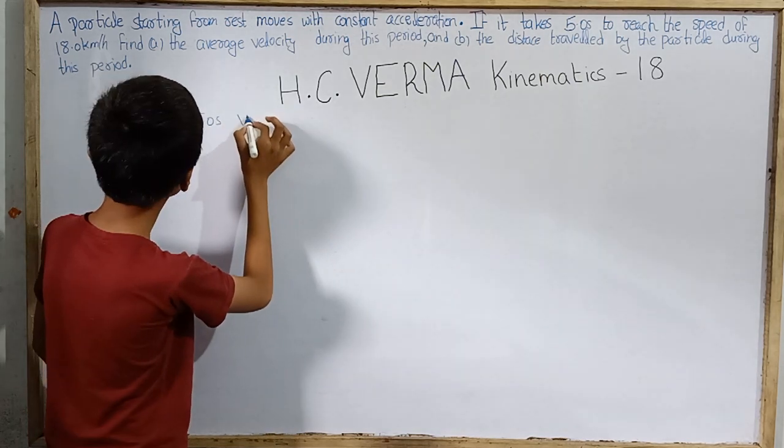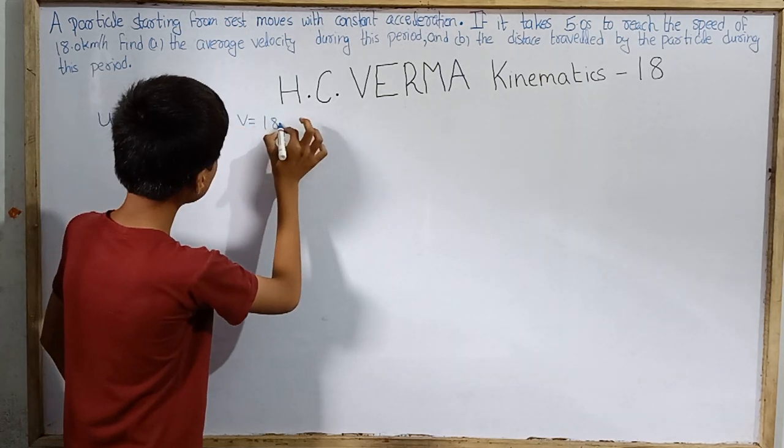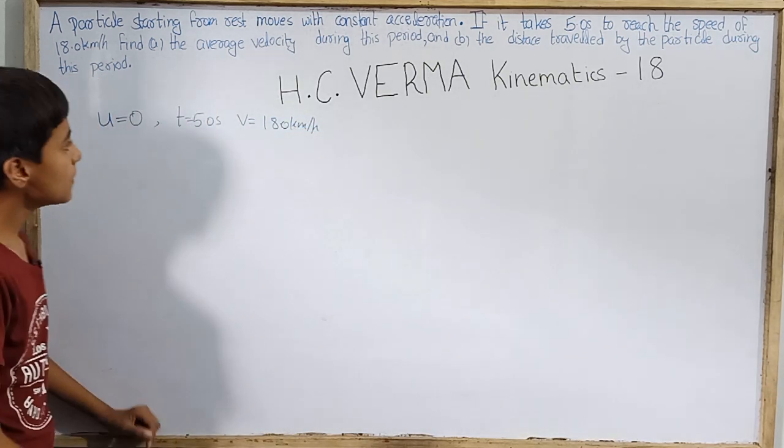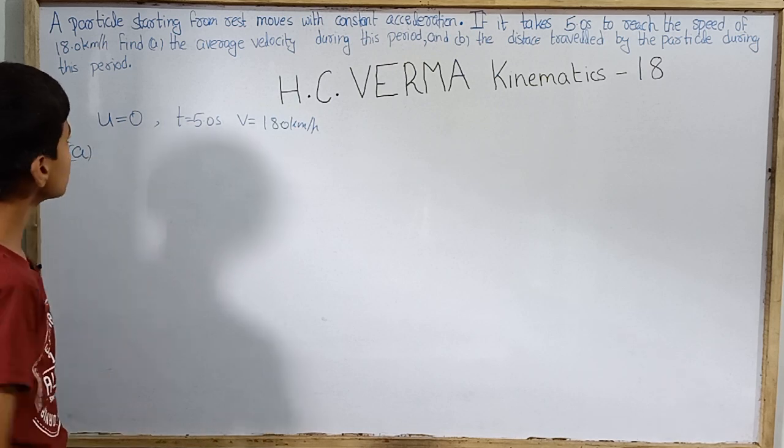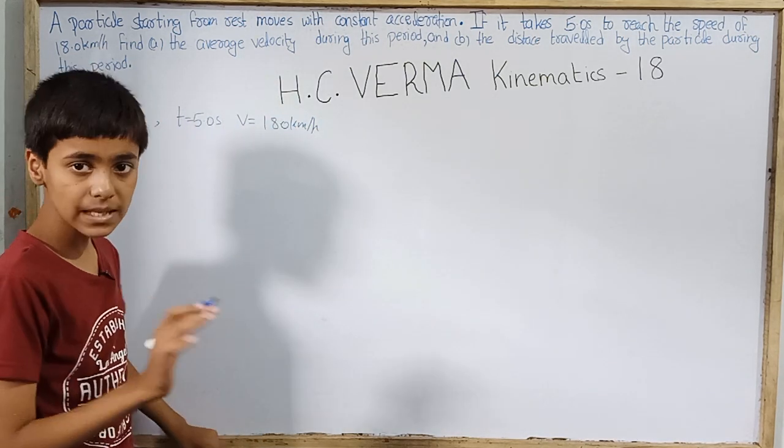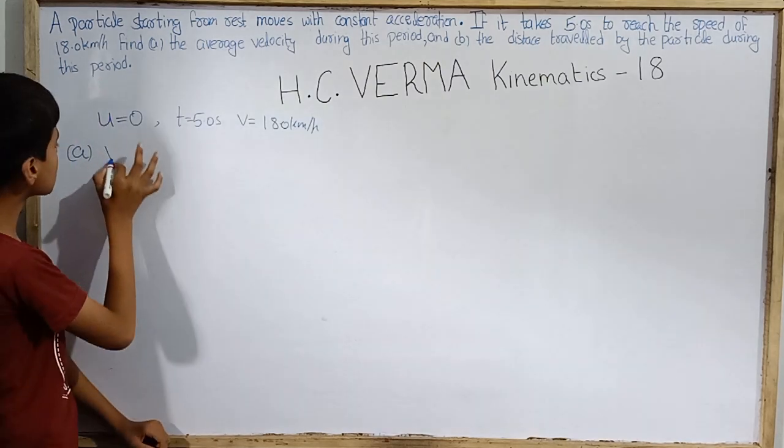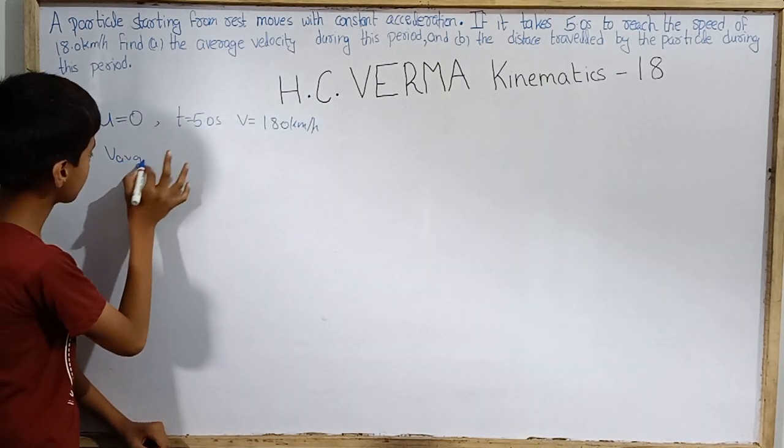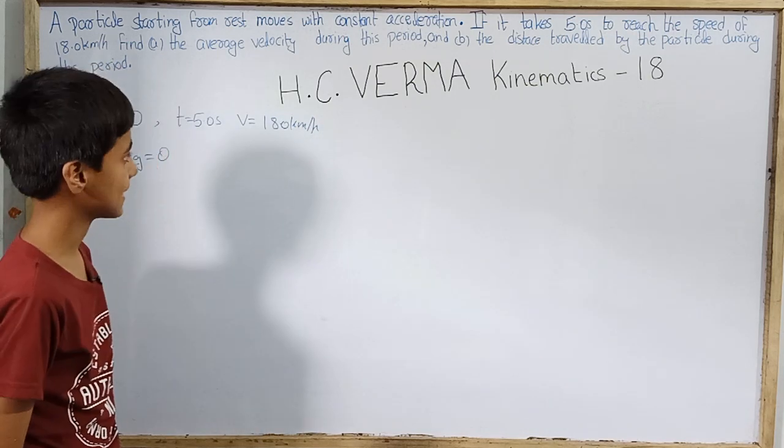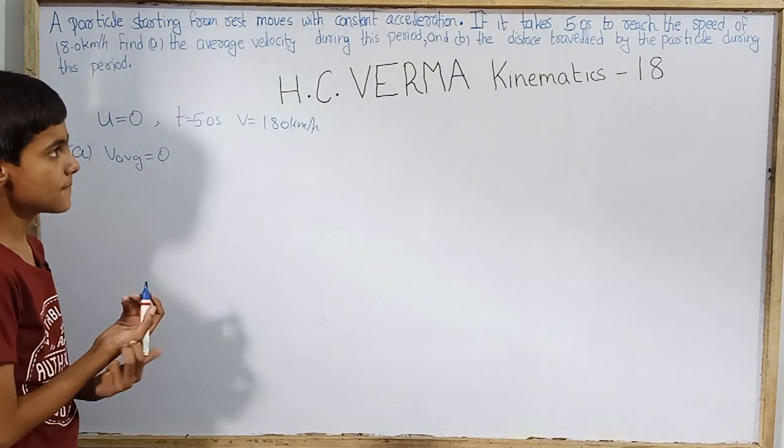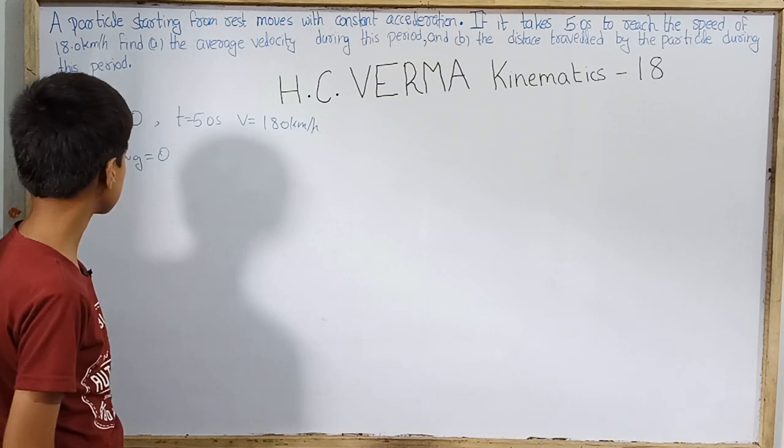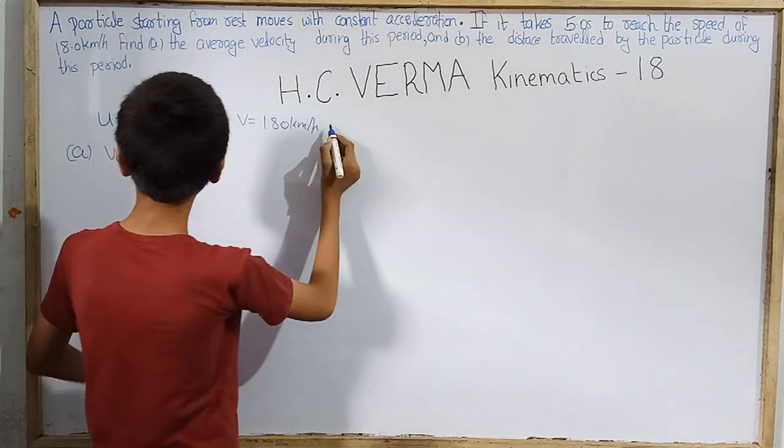The speed is 18.0 km per hour. Let us find the average velocity of this particle during 0 to 5.0 seconds. And in B we will find the distance travelled during 0 to 5.0 seconds.